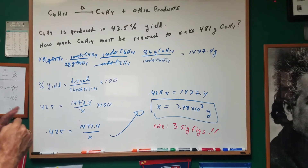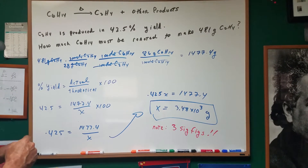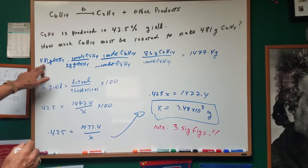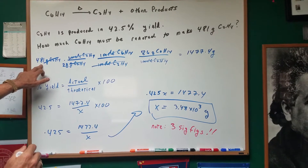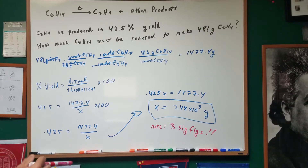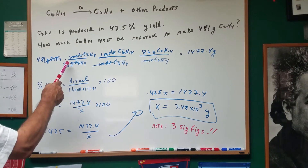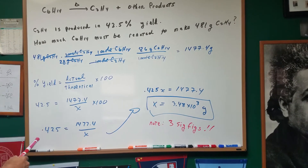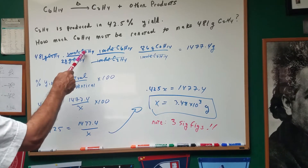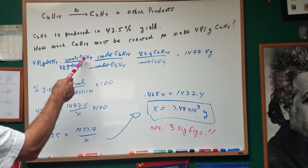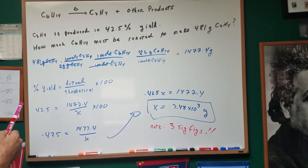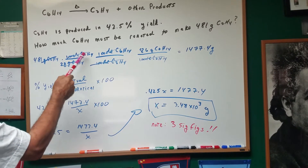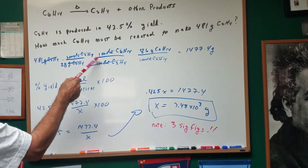We just need to make sure we understand how to do a problem like this. We're going to first take the 481 grams of the ethylene and convert it into moles. One mole is 28 grams, and that crosses out grams of the ethylene. Now we look at the mole ratio: we have one mole of hexane reacting to produce one mole of ethylene, so the moles cancel out.